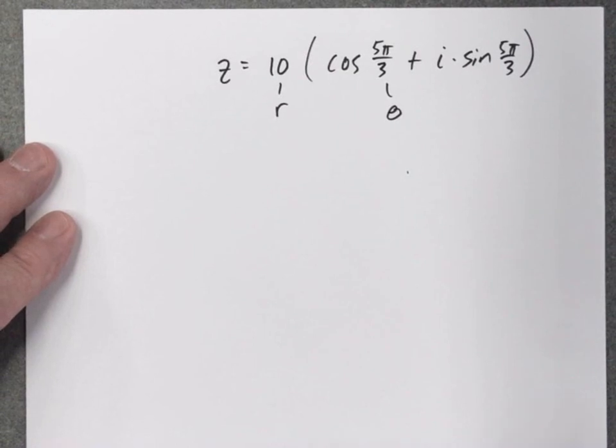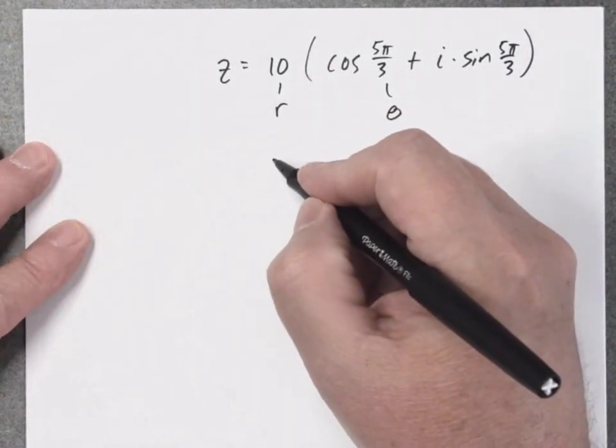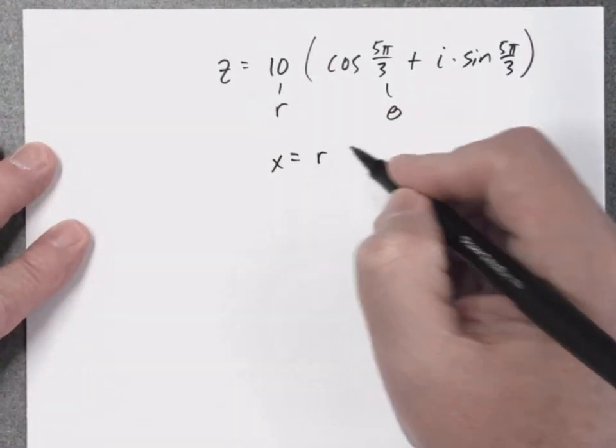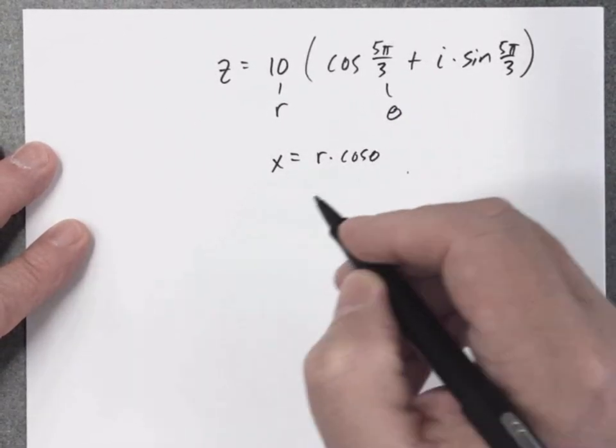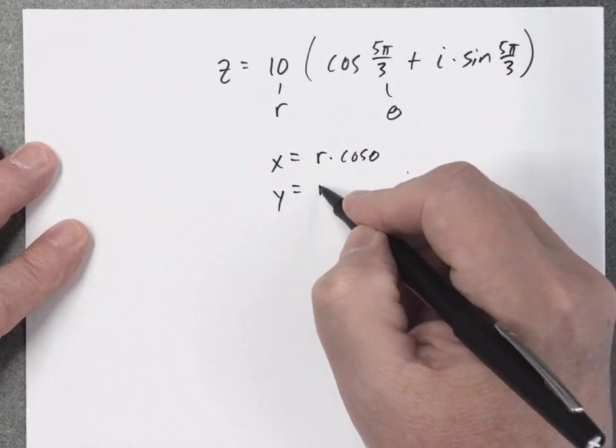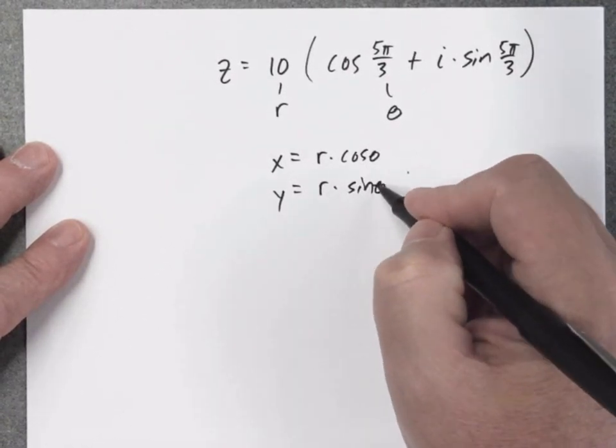Now to go to rectangular, if you remember when we did polar coordinates, X is going to be R cosine theta, and Y is R times sine theta.